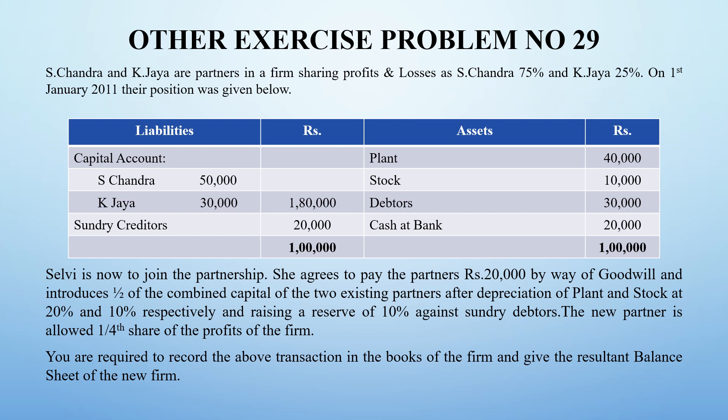This is the status of the balance sheet. Selvi is coming in as a new partner into the business. She has to bring Rs. 20,000 as goodwill. And her capital will be half of the combined capital after revaluing the assets and liabilities. After all revaluation, we calculate the total capital and divide by 2 - that half is what Selvi has to bring.